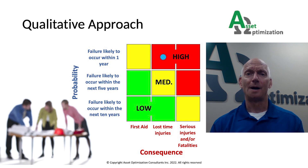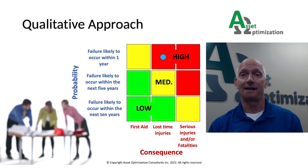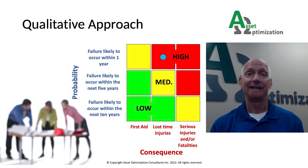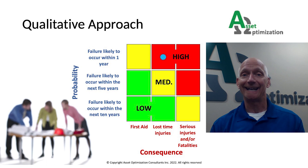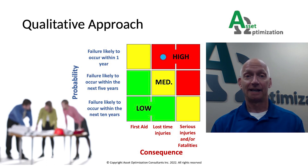In this example, probability would be estimated based upon the failure history of the equipment or similar equipment being evaluated. And the consequence would be classified based upon injury severity if a leak caused by damage mechanisms were to occur. Using this example qualitative methodology, if you are expecting to have a failure caused by damage mechanisms within the next year and that loss of containment might result in a lost time injury or injuries, then the risk would be classified as high, as identified by the blue dot on the risk matrix.